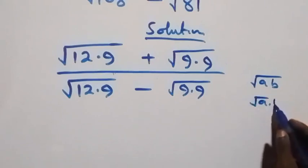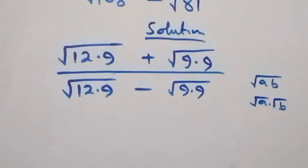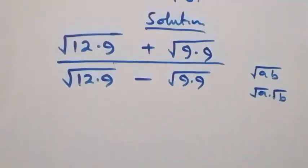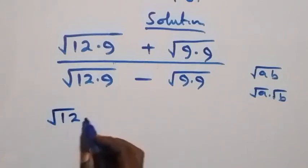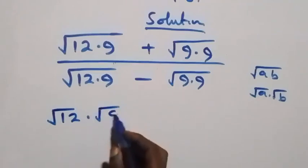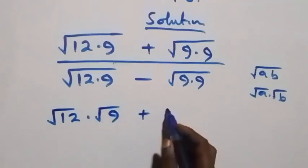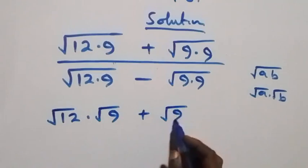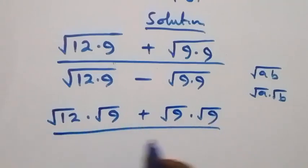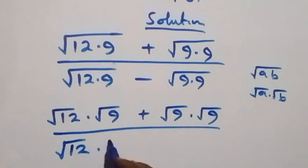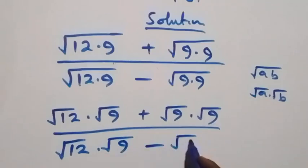From here, we have root(a × b), which is the same thing as root(a) times root(b). So we can separate this, and this becomes root(12) times root(9) plus root(9) times root(9), then divided by root(12) times root(9) minus root(9) times root(9).